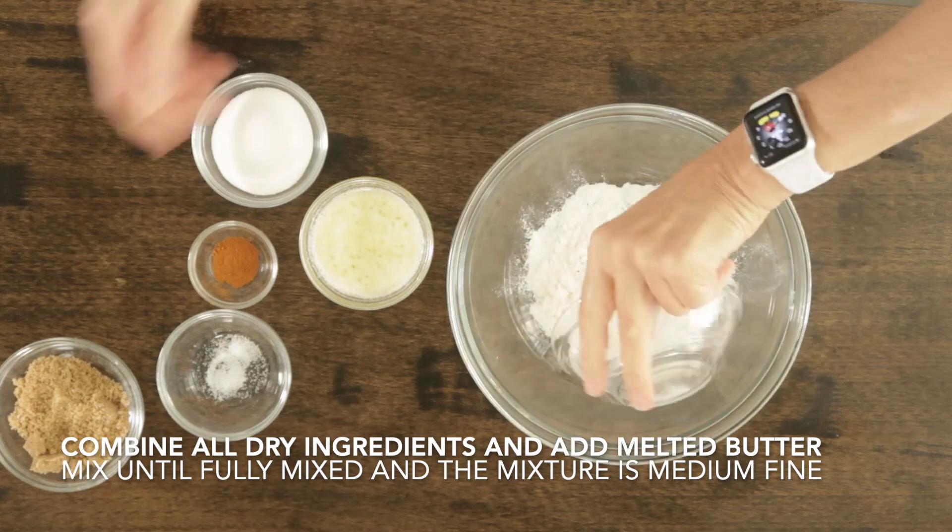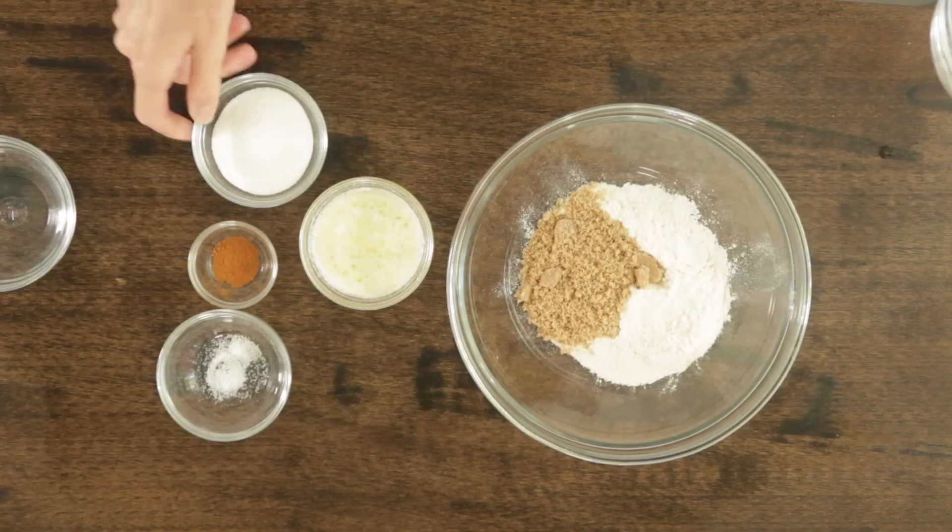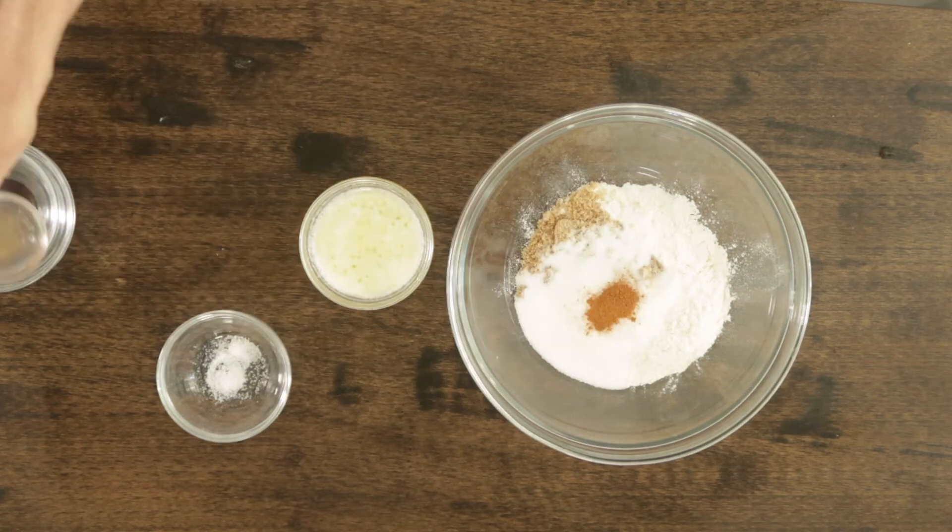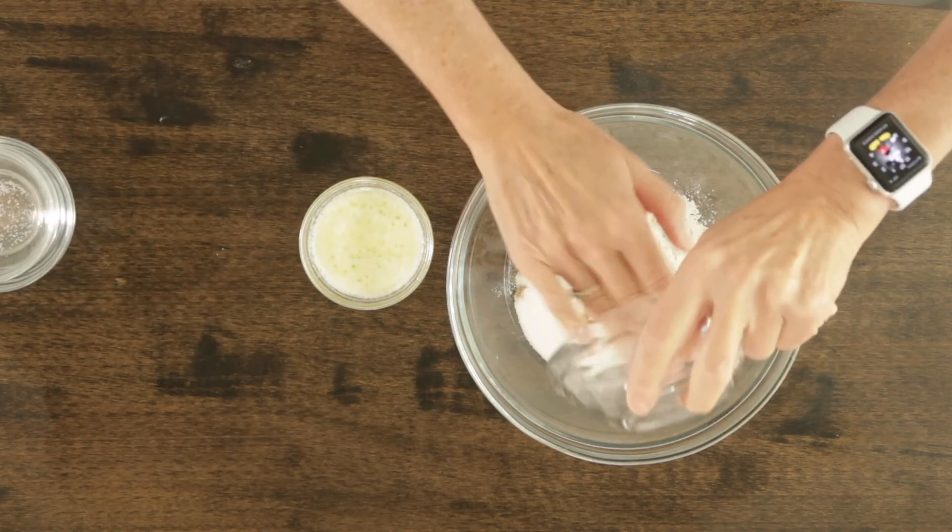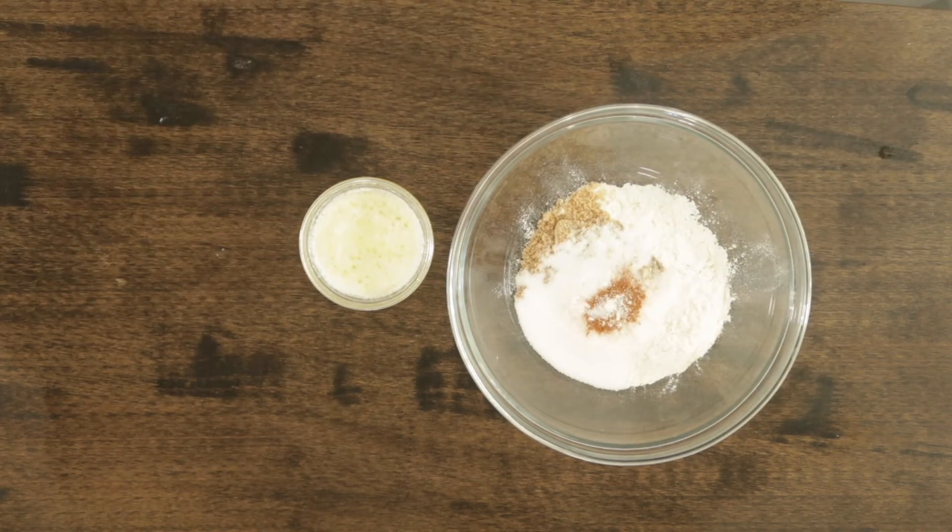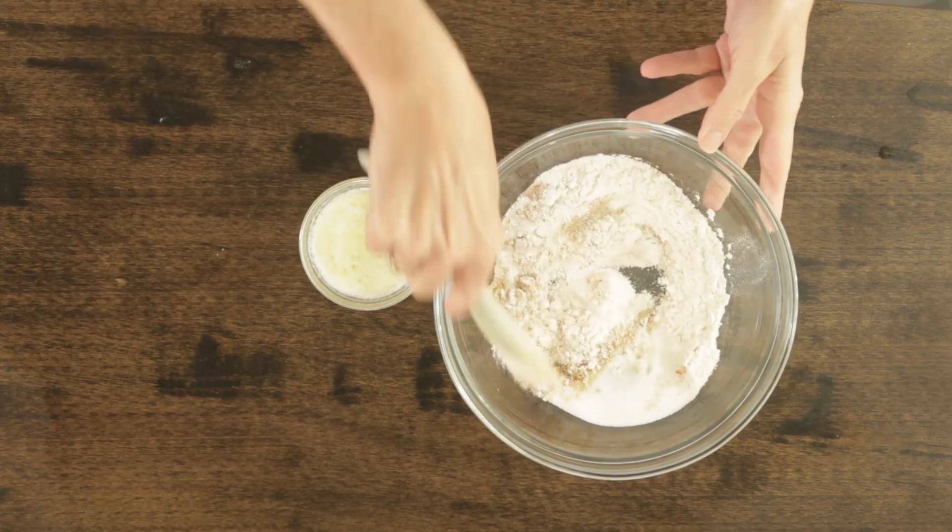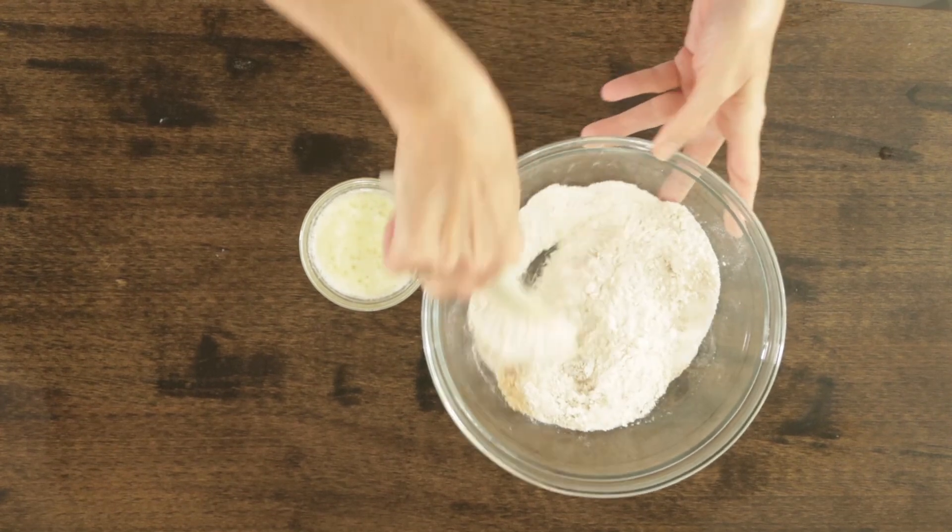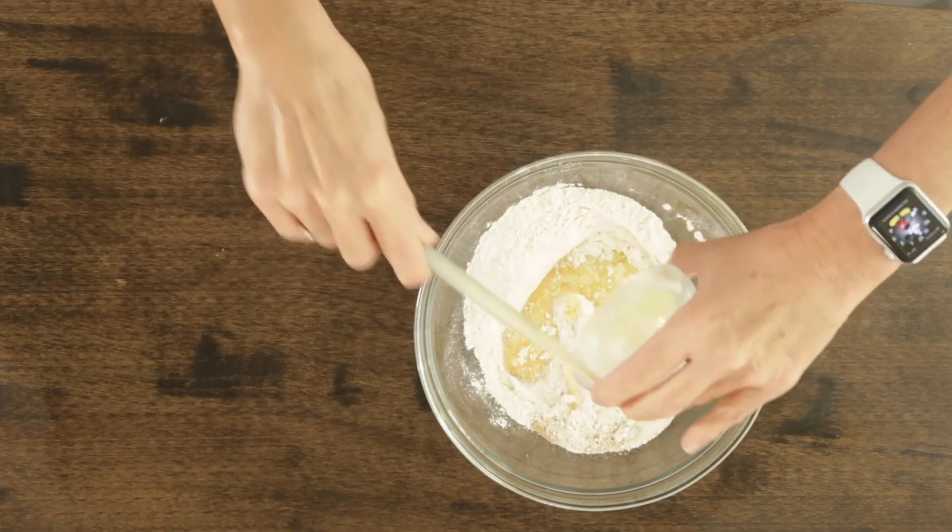This is the easiest crumb topping ever. First thing to do in a medium-sized bowl, make sure it's big enough, combine your dry ingredients. Make sure you get everything. Then take a spatula and stir until everything is well combined.